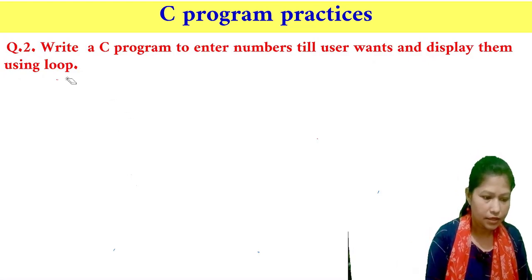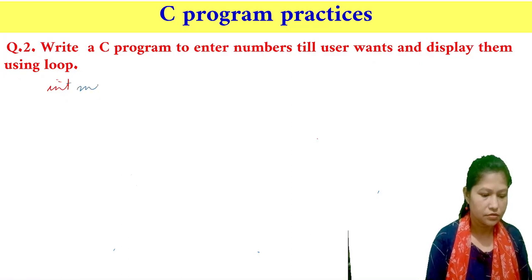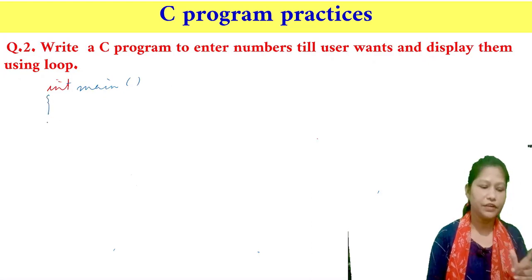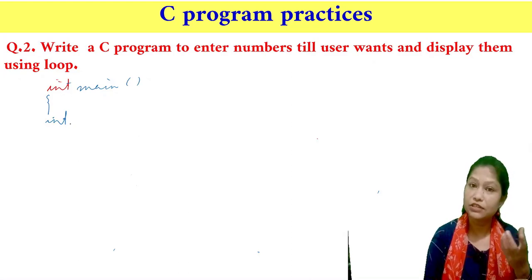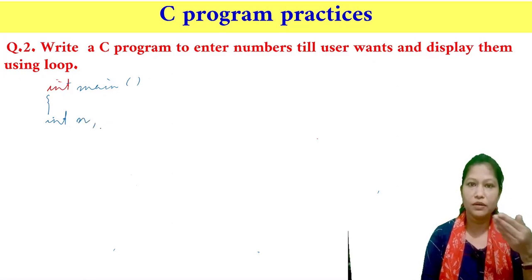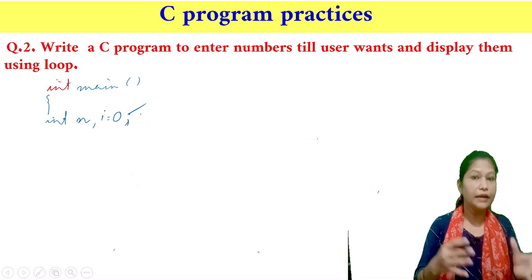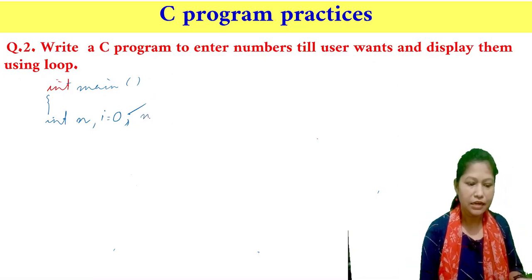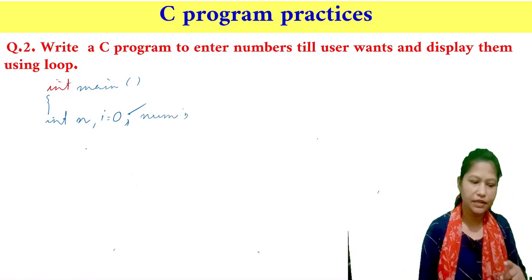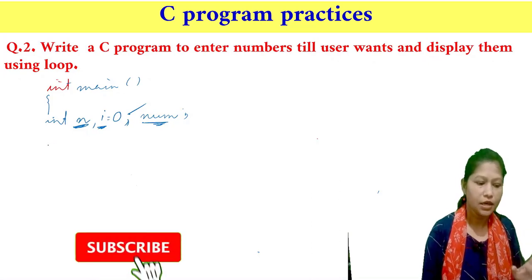We declare three variables: int i for the loop counter initialized to 0, int num to store each entered number, and int n for the user's choice of how many times to run the loop. So we have int i = 0, num, n as our total three variables.